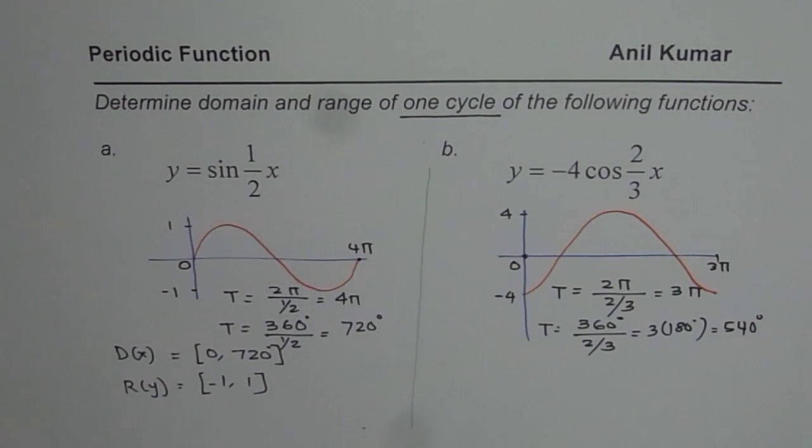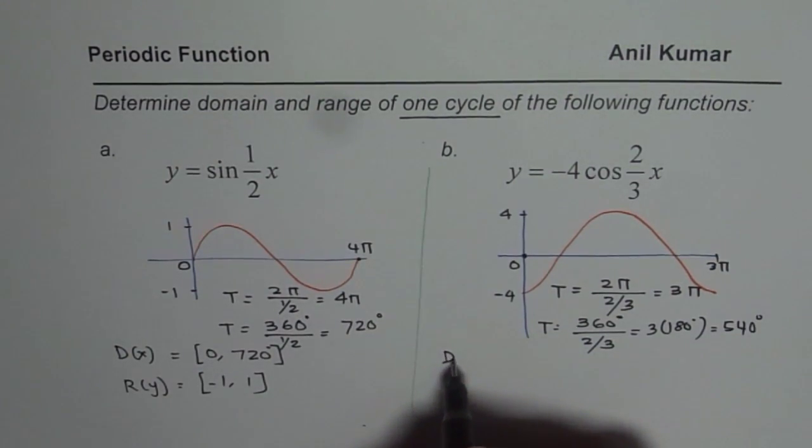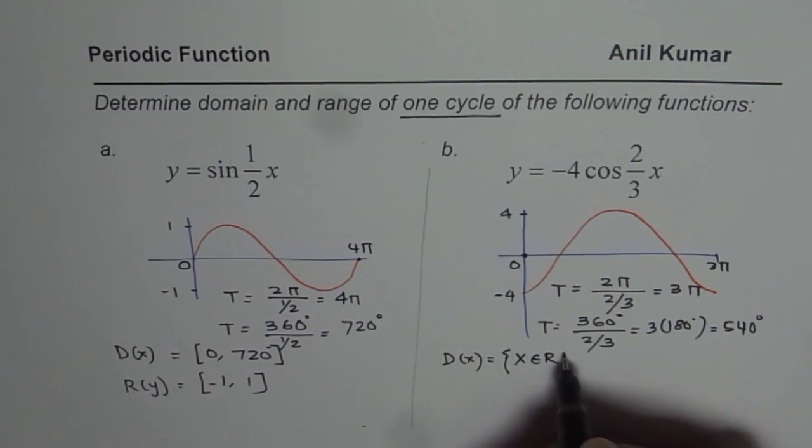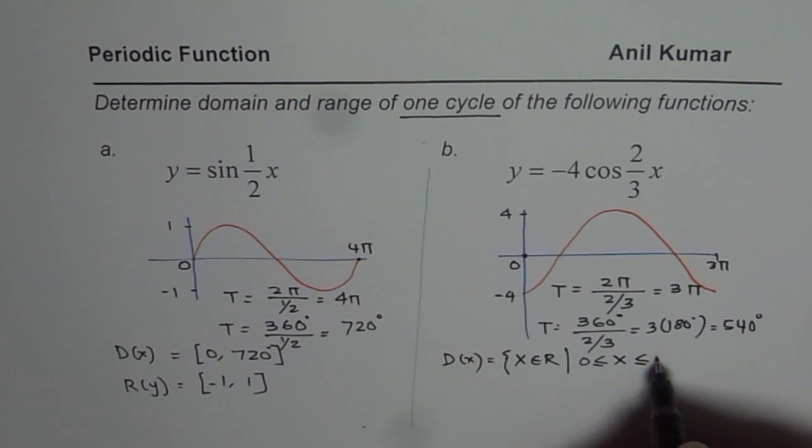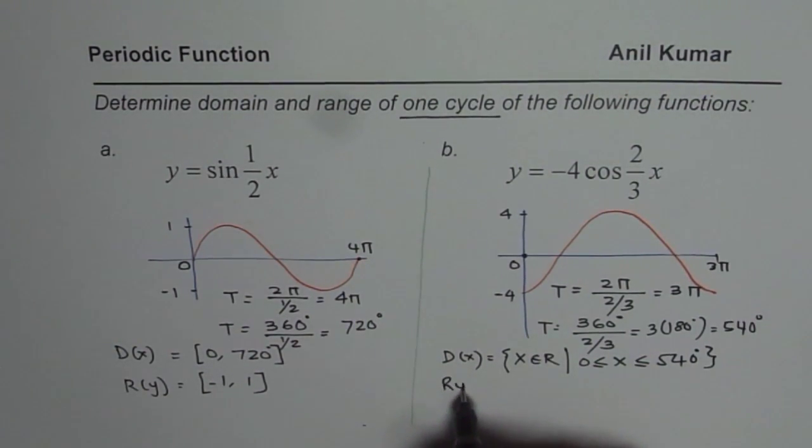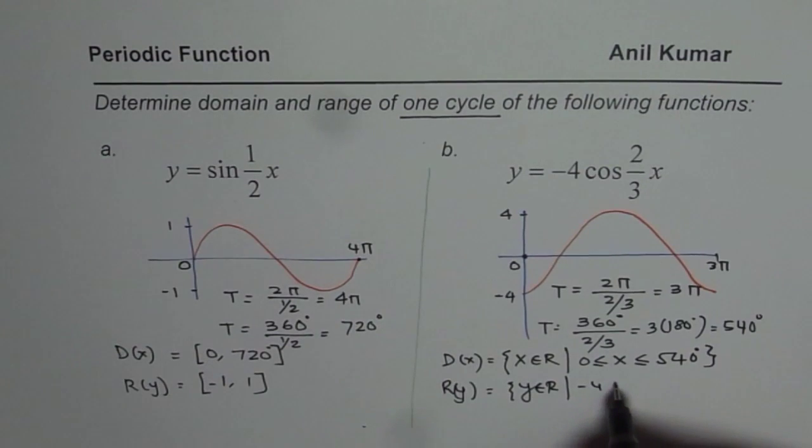So 540 degrees is the time period for this particular cosine function. Therefore, we can write domain for the function as, I am changing the format, we say x belongs to real numbers where x is from 0 to 540 degrees, and the range y of the function will be y belongs to real numbers where y is from minus 4 to plus 4.